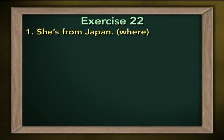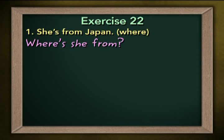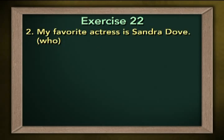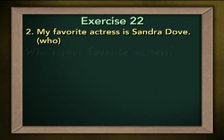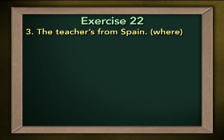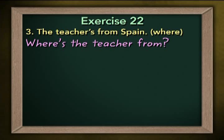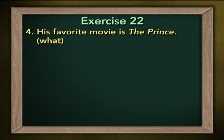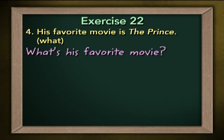Let's review that exercise. You saw 'She's from Japan. Where?' and you wrote 'Where's she from?' Good. 'My favorite actress is Sandra Dove. Who?' — you wrote 'Who's your favorite actress?' 'The teacher's from Spain. Where?' — you wrote 'Where's the teacher from?' 'His favorite movie is The Prince. What?' — you wrote 'What's his favorite movie?' 'I'm six feet tall. How tall?' — you wrote 'How tall are you?'